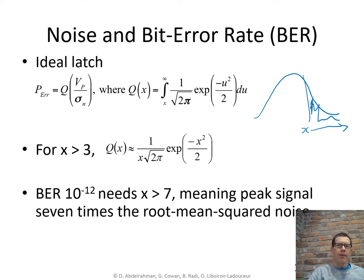So the bit error rate could be calculated by evaluating this q function where the q function is the integral of the gaussian distribution. Now that's a difficult function to evaluate but for x greater than three we can approximate the q function with this deterministic function it doesn't require an integration. What many designers just sort of remember in the back of their mind is that for a bit error rate of 10 to the minus 12 which is a common target this argument x needs to be greater than seven so what does that mean it means that the peak signal value needs to be seven times the rms noise.